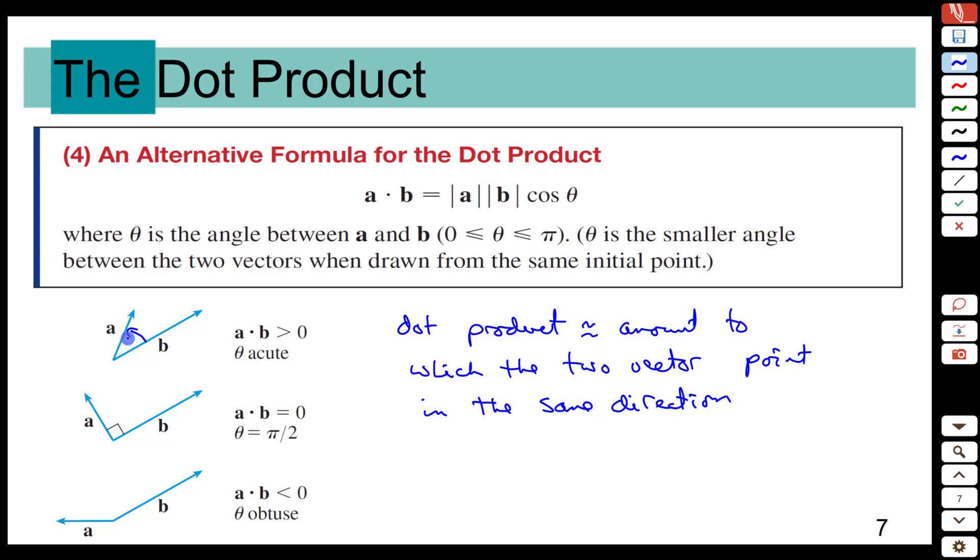What we see here is that the smaller the angle is, the larger cosine of theta would be. Again, quick sketch of cosine. It has a maximum when its input angle is zero, but for small angles it's still large. And if we take into account the length of the two vectors, we're going to maximize that product with the smallest possible angle.